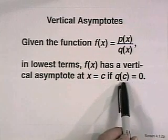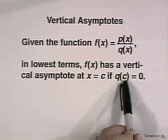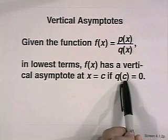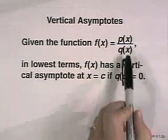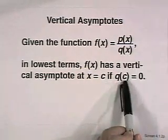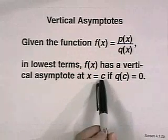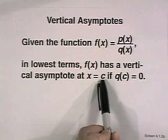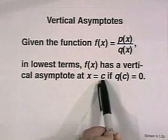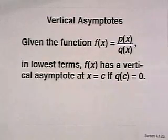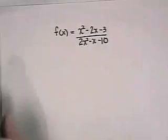if q of c equals zero. That is, the value of x that makes the denominator zero becomes the value we substitute into the equation for a vertical line. Let's see how that works with a specific example.